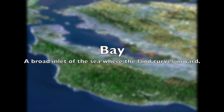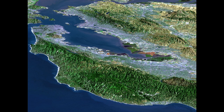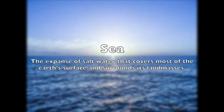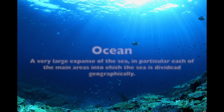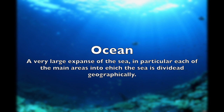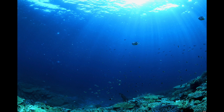Bay: a broad inlet of the sea where the land curves inward. Sea: the expanse of salt water that covers most of the Earth's surface and surrounds its land masses. Ocean: a large expanse of sea, in particular each of the main areas into which the sea is divided geographically.